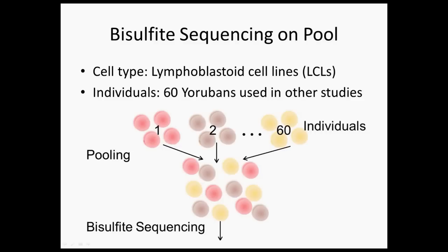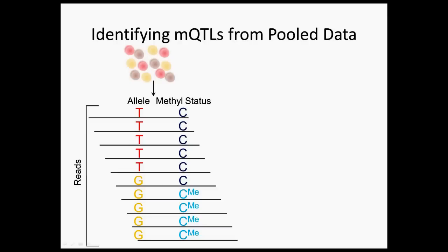You may be wondering: if we are doing this study on a pool of cells, how do we get MQTLs? The way we do it is, as I mentioned, when we sequence we have all of these reads, which are pieces of DNA. If a SNP is near a C, we can on a single read see what version of the SNP we have and whether or not the C is methylated.